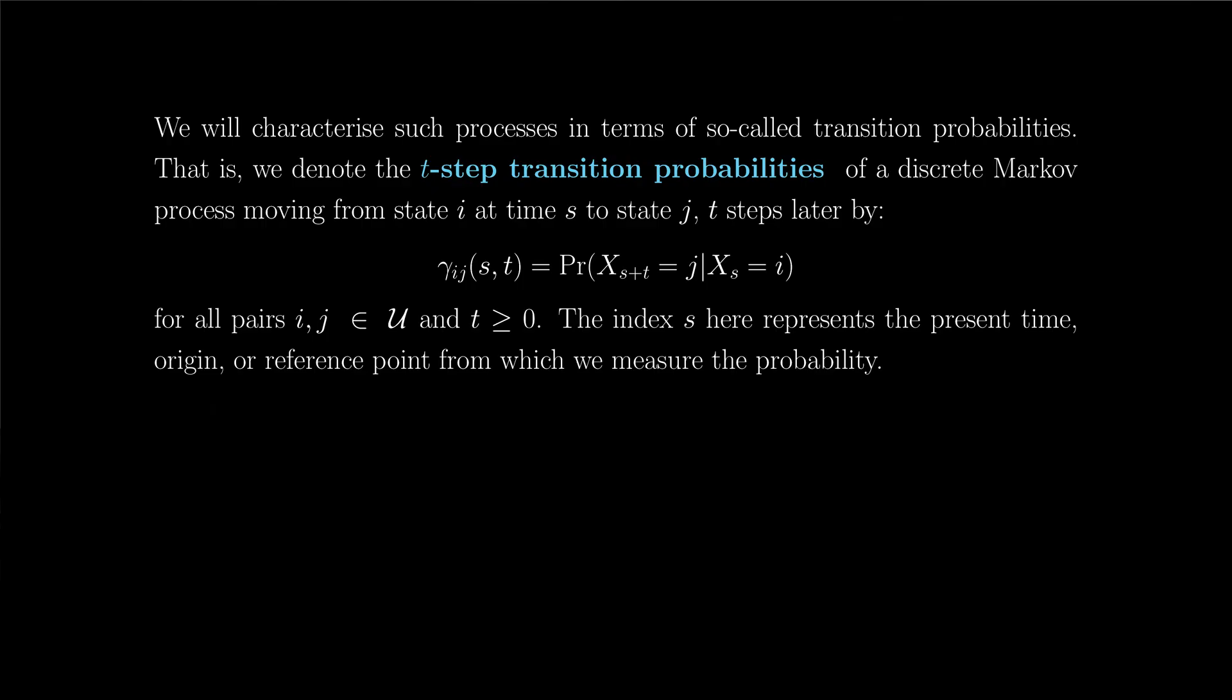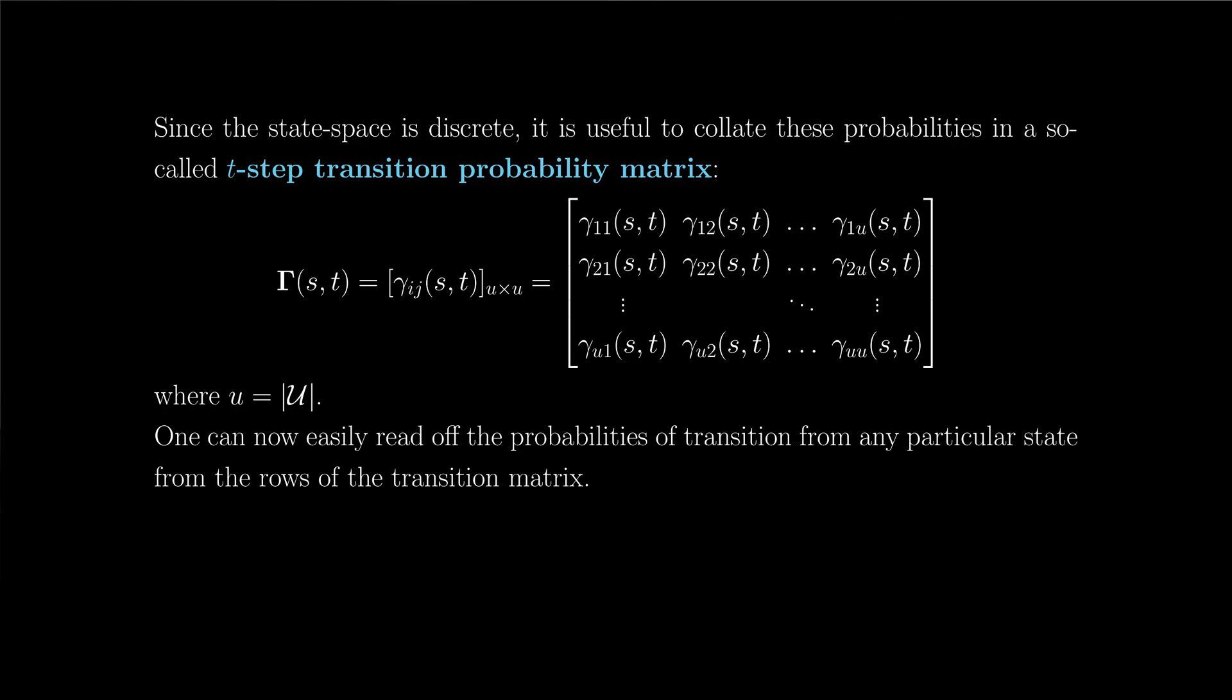So for what follows, it's useful to think of s here as being a reference point in time from which we evaluate the probability and t as the number of discrete steps forward in time from that reference point. Now because we characterize probabilities for all pairs i and j where i and j are drawn from the same set, it is useful to collate these probabilities into a square matrix. So this is the so-called t-step transition probability matrix, which we will simply denote uppercase gamma arguments s comma t, which is just a matrix where the ijth element is the ijth t-step transition probability, which we have just defined. So what this means is that each row of this matrix thus represents the distribution of the state of the process t steps later, conditional on being in a state corresponding to the row index at time s, the reference point in time.